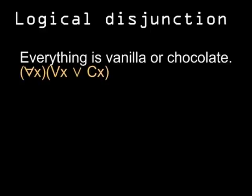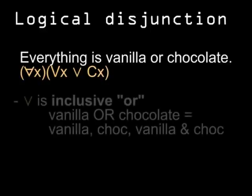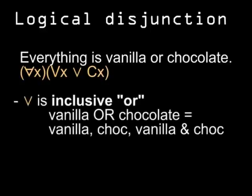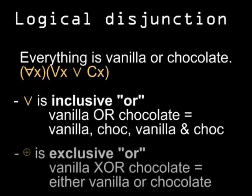Both? Yes — this OR is called inclusive. When you're joining two things with a logical OR, you're saying the first thing, the second thing, or both of them. If you want to rule out the option of both, you have to use what's called an exclusive OR. For example, 'it's vanilla or it's chocolate, but not both chocolate and vanilla.'